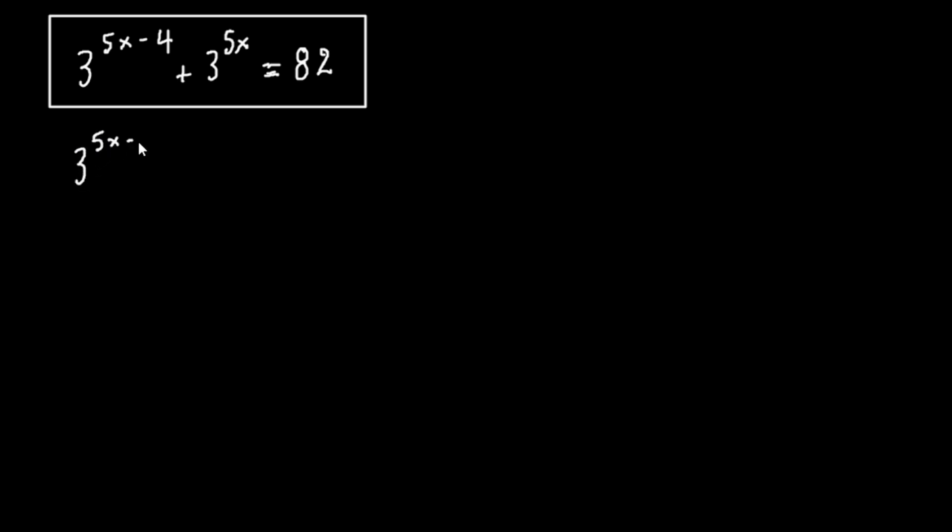Let's rewrite it here and try to solve it. We have 3 to the 5x minus 4 plus 3 to the 5x equals to 82. Here we must simplify this exponential.